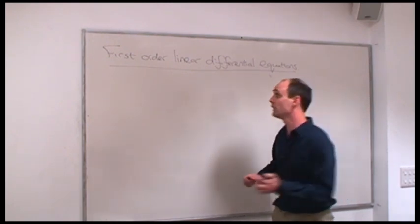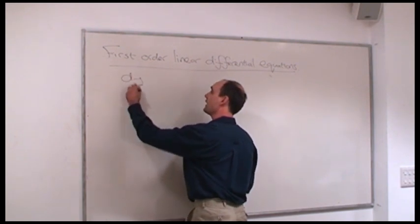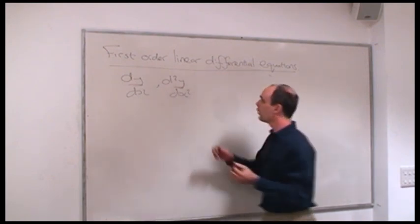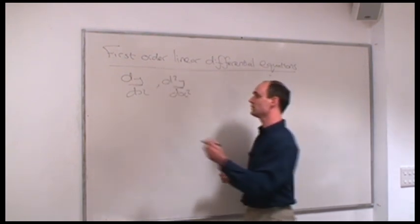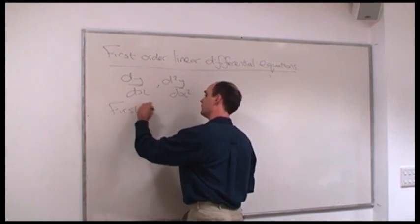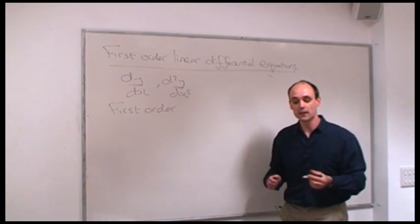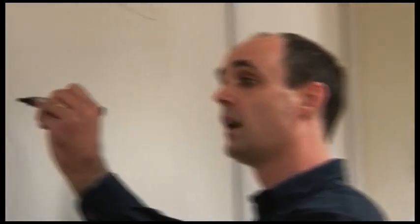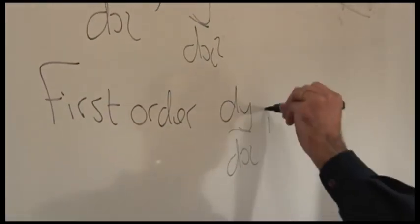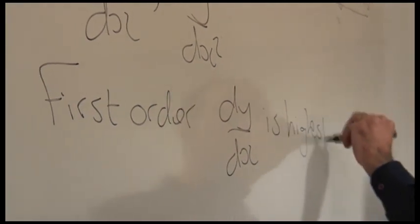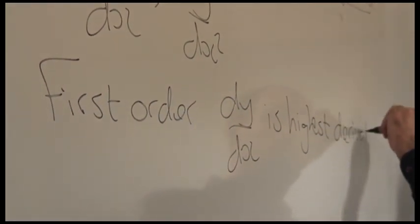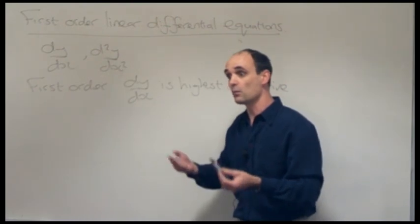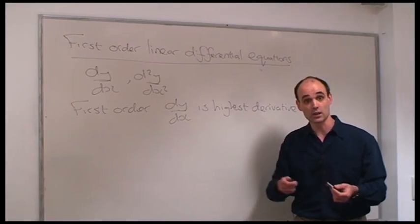A differential equation is an equation involving derivatives like dy by dx or d²y by dx squared. First-order means that there are no higher derivatives than dy by dx — so dy by dx is the highest derivative. That means you won't have anything like d²y by dx squared or d³y by dx cubed in your differential equation.